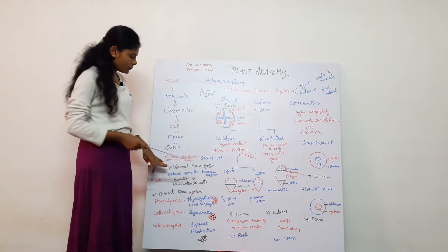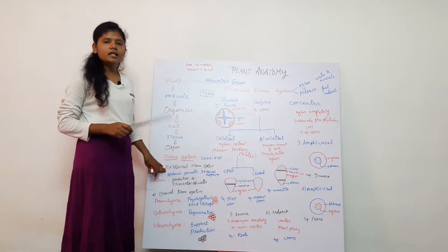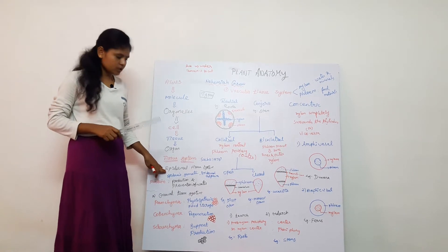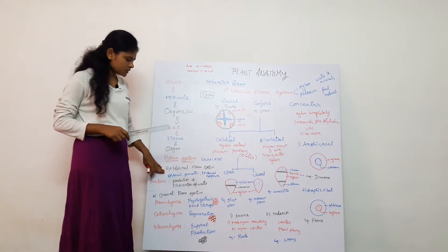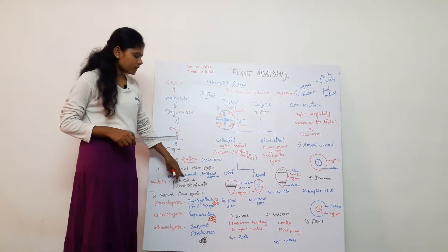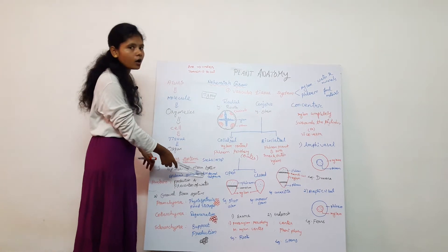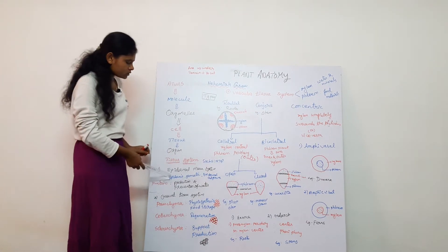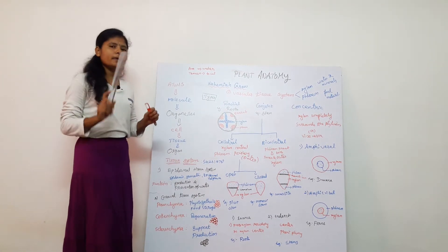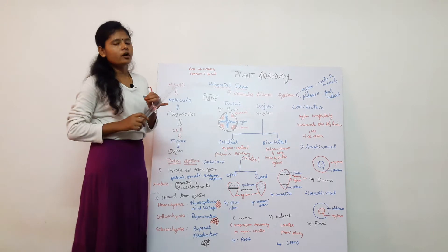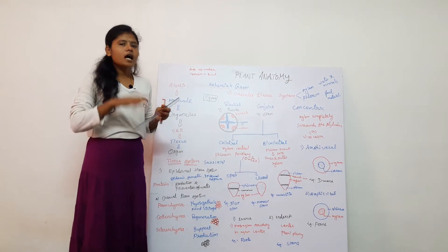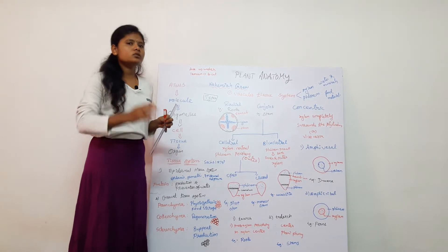What does the epidermal tissue system consist of? It includes the epidermis, stomata, and internal outgrowths. If you look at the epidermis of a plant — whether it is a leaf, stem, or root — it is the outermost layer.